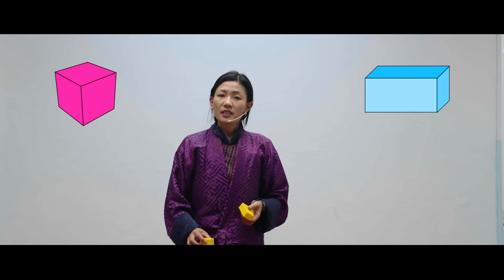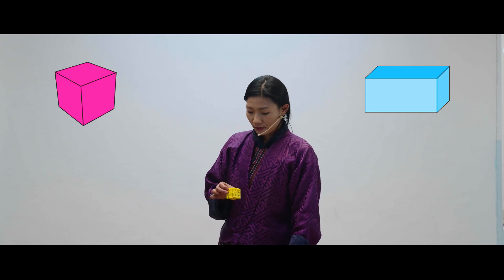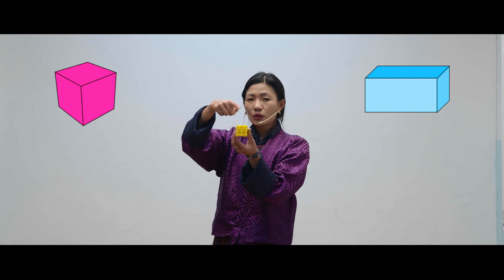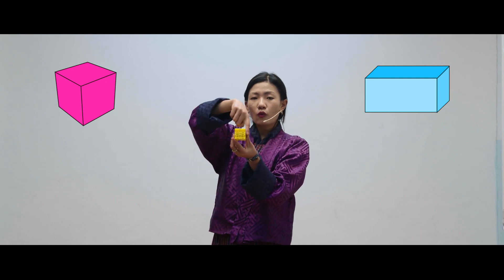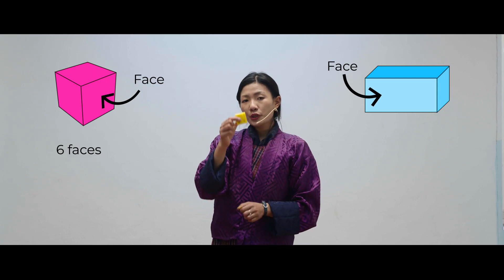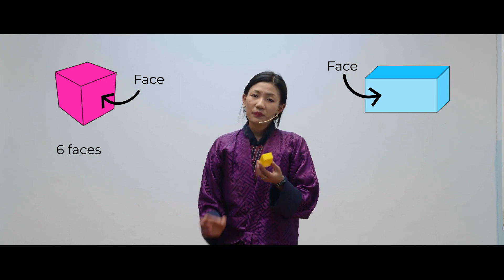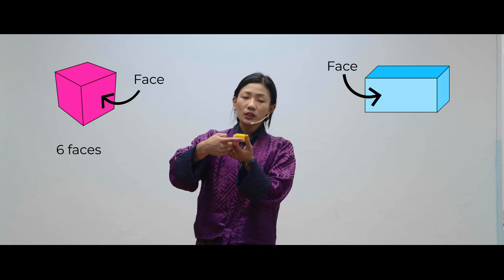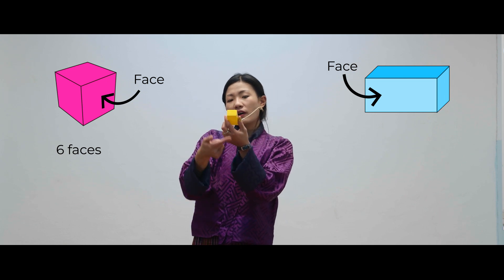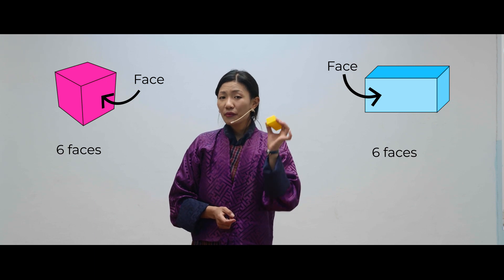Let's count the number of faces on each of these shapes. For the cube: 1, 2, 3, 4, 5, and 6. A cube has 6 faces. Now, take a look at the rectangular prism. Let's count: 1, 2, 3, 4, 5, and 6. A rectangular prism also has 6 faces.